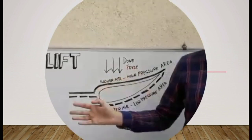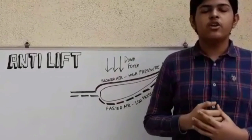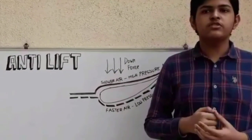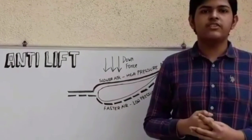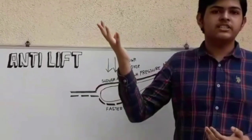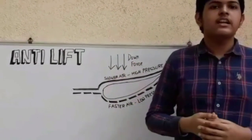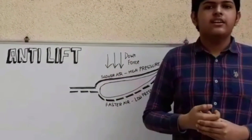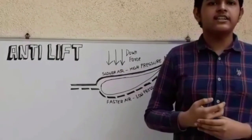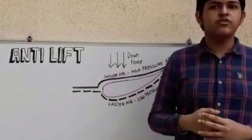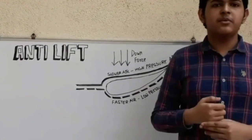The next force we are going to talk about is anti-lift, commonly referred to as downforce. Downforce is a force that works in the opposite direction to conventional lift. Instead of lifting objects upwards, it pushes them downwards towards the ground. Downforce is a very important factor in car design as it helps cars achieve greater amounts of grip in order to keep them stable on the ground.